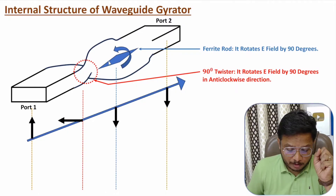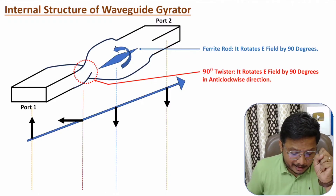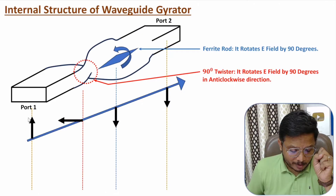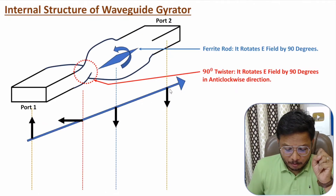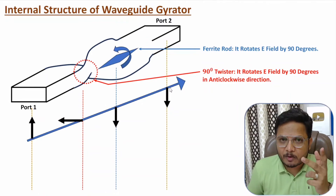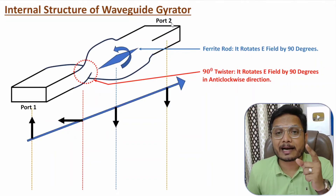After that, we have the ferrite rod, which again rotates the electric field by 90 degrees in the clockwise direction. So after passing through the ferrite rod, another 90-degree rotation happens, making the electric field point in the downward direction. This downward-direction electric field appears at port 2. So we have vertically oriented electric field at port 1, and vertically oriented but downward electric field at port 2 — meaning there is a 180-degree phase shift.